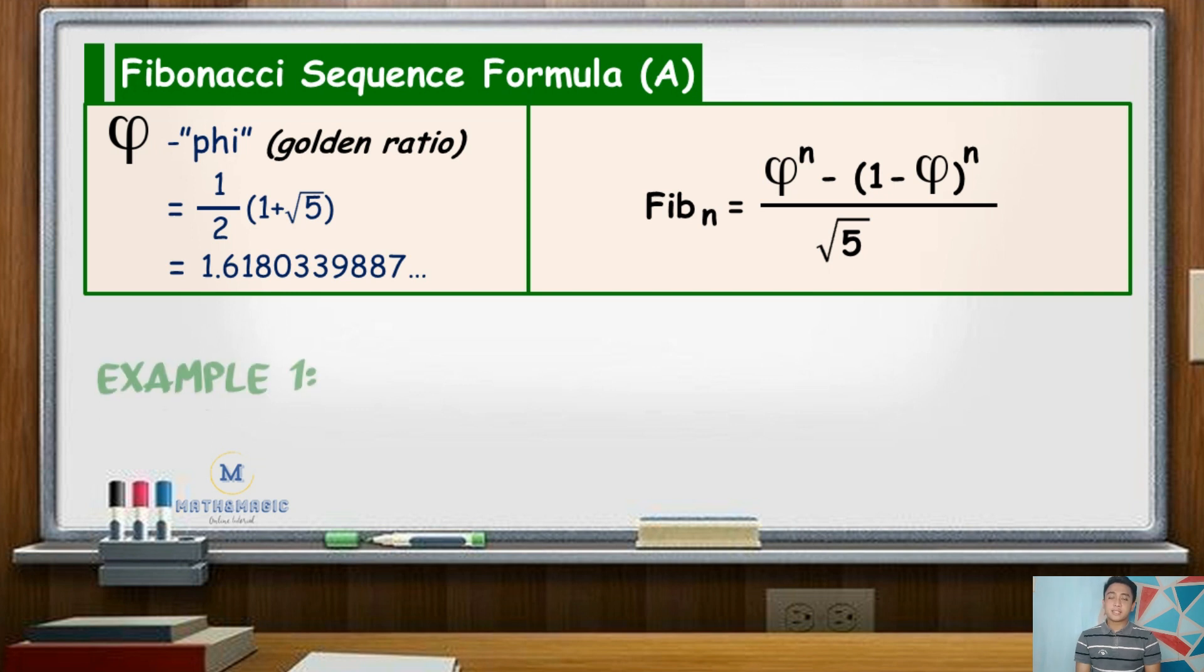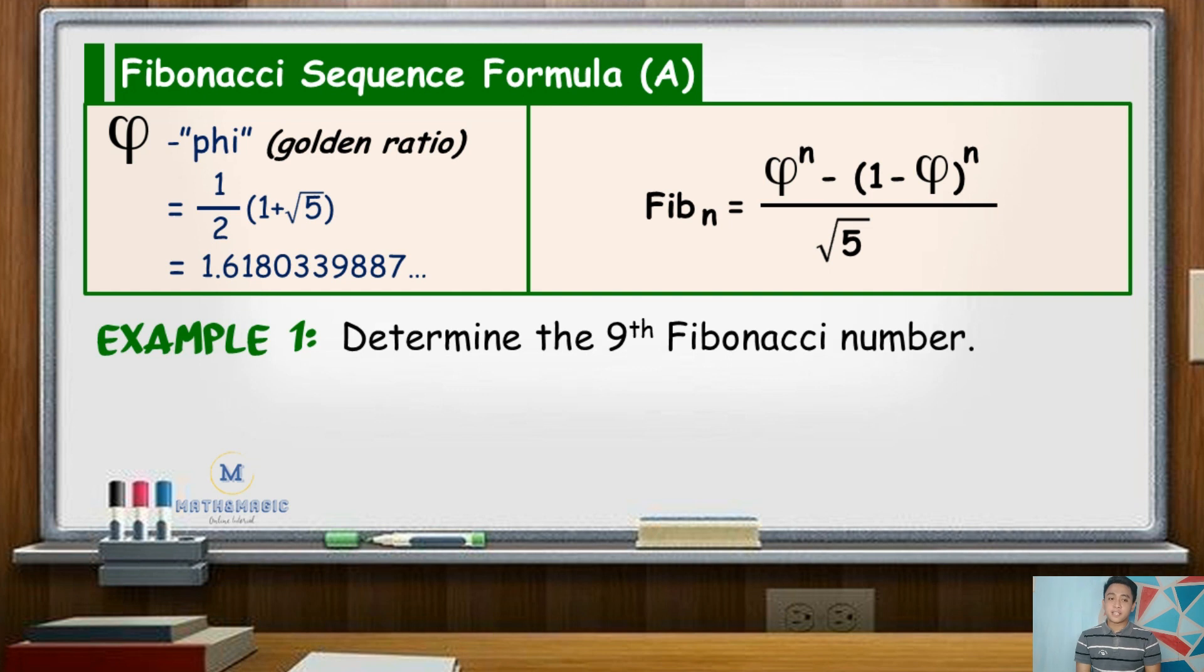As an example, determine the ninth Fibonacci number. Using the first method, write a list of numbers beginning with 1, 1, and then add the preceding numbers until you reach the ninth place. So that is 1, 1.